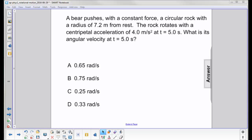A bear pushes with a constant force a circular rock with a radius of 7.2 meters from rest. The rock rotates with a centripetal acceleration of 4.0 meters per second squared at time equals 5 seconds. What is its angular velocity at t equals 5 seconds?